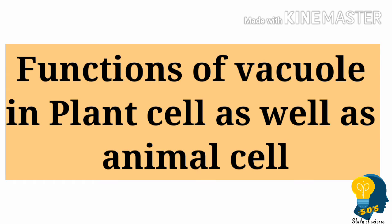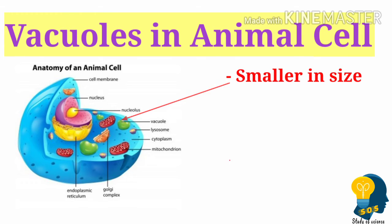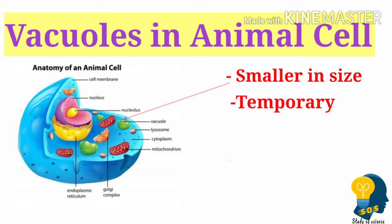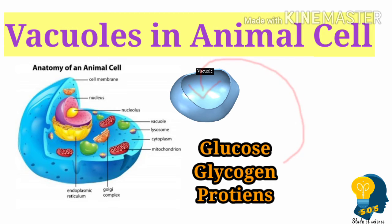In animal cells, vacuoles are smaller in size and they are temporary. If the animal cell requires vacuoles, they form; otherwise they are absent. When present in the animal cell, vacuoles store glucose, glycogen, and proteins.